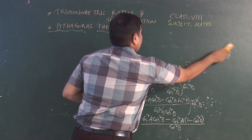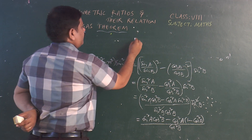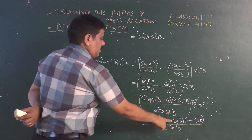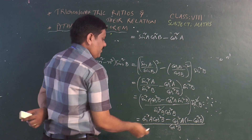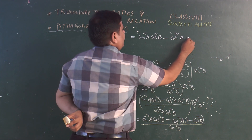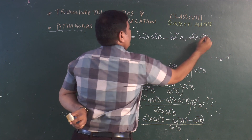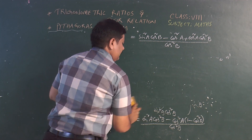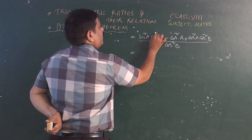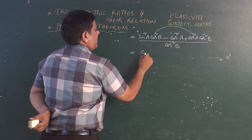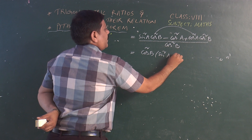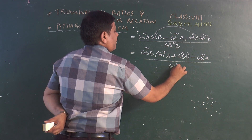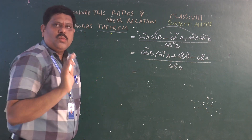That is going to be sin² A cos² B minus cos² B plus cos² A cos² B, all upon cos² B. Now if I do further simplification, if you take these two terms, both have cos² B common. So taking cos² B common, we get sin² A + cos² A minus cos² B, all times cos² B upon cos² B.